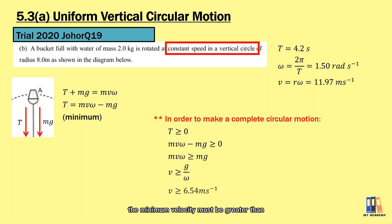Solving the equation here, the minimum velocity must be greater than 6.54 m per second, which is already achieved by the bucket in this case, so it can successfully make complete vertical circular motion with the water inside the bucket.